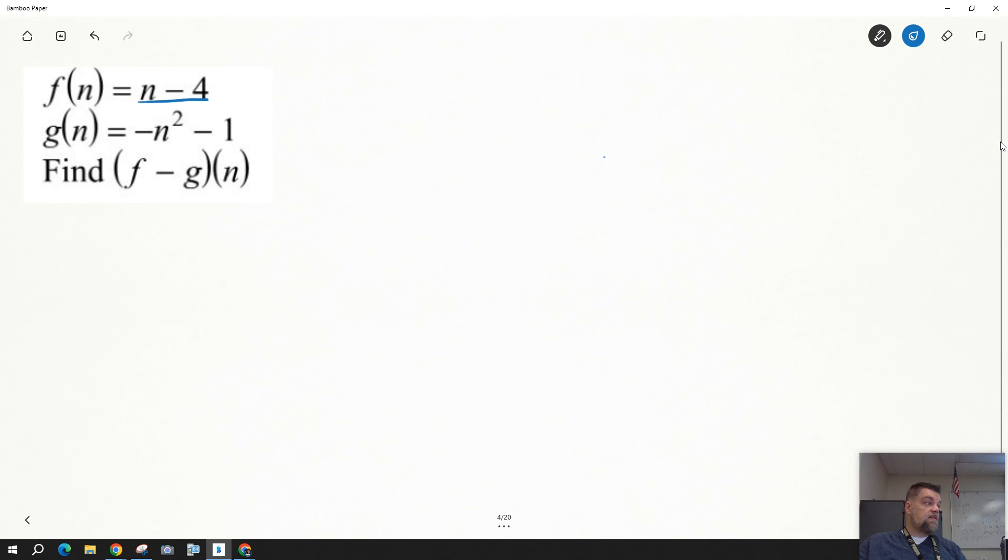I have f of x, right? So when I say f minus g, I really am going to say, well, it's f of n this time. And then when I subtract g from it, I'm going to subtract g of n.